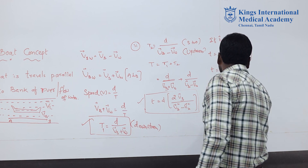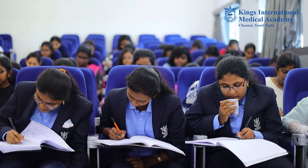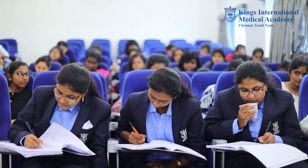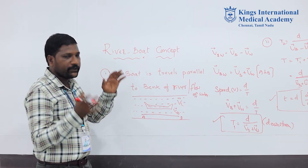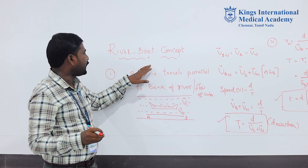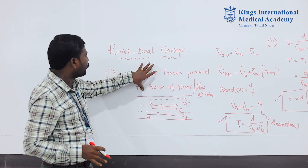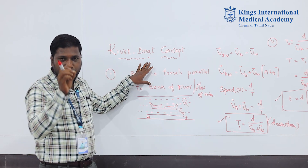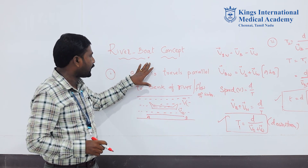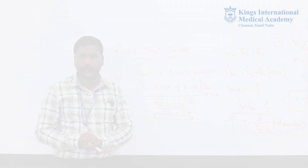This is a very important formula for NEET content. The riverboat concept is a very important topic in the vectors chapter, which is the third chapter in the plus one syllabus, and it is based upon relative velocity content. I hope you understand very clearly. Thank you.